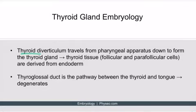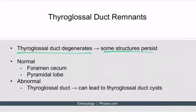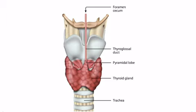As a brief review: the thyroid diverticulum travels from the pharyngeal apparatus down to form the thyroid gland. The thyroid tissue is made of follicular and parafollicular cells, both derived from endoderm. The thyroglossal duct is the pathway between the thyroid and the tongue, and it normally degenerates. Normal remnants include the foramen cecum, which is expected in everyone, and the pyramidal lobe, which is a normal variant if present. This image shows both remnants.